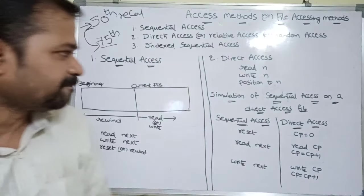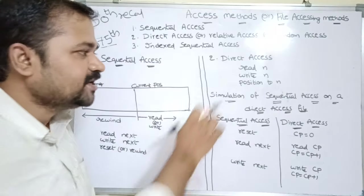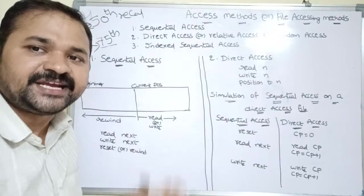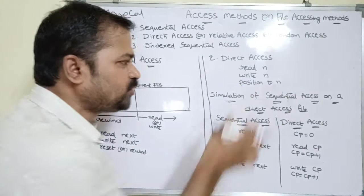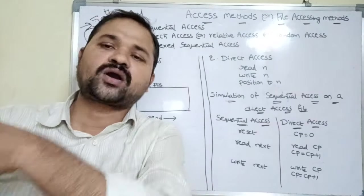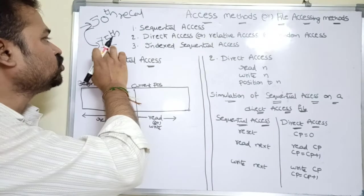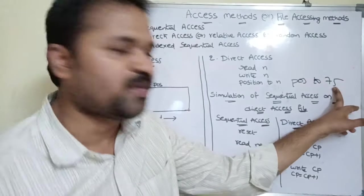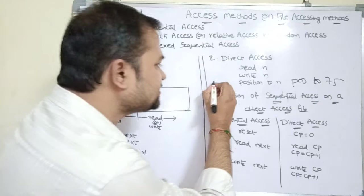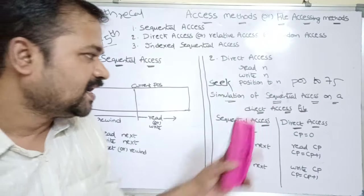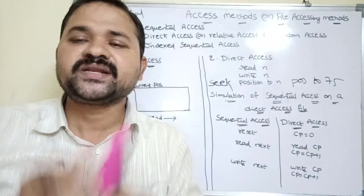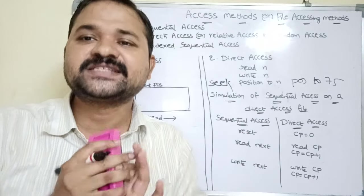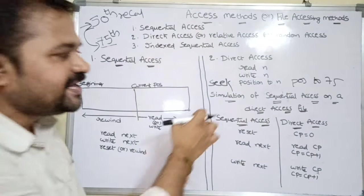The operations in direct access are: read n — read block number n; write n — write content into block number n; and position to n — move the read/write head to block number n. For example, if we are at the 50th block and want to move to the 75th block, we write 'position to 75' and the read/write head will be placed at the 75th block. This position operation is like the seek operation in C language; it only moves the file pointer without performing any input or output operation.